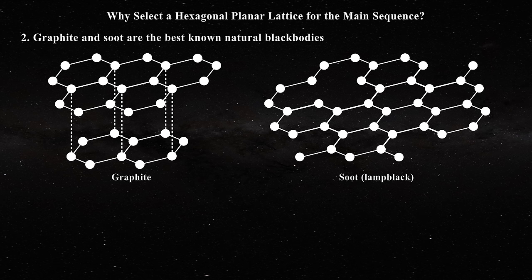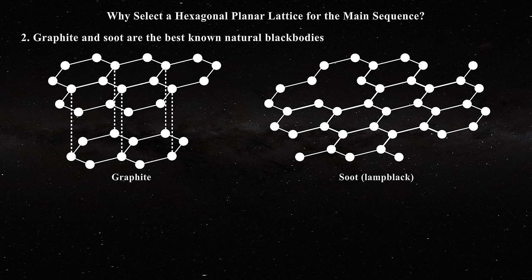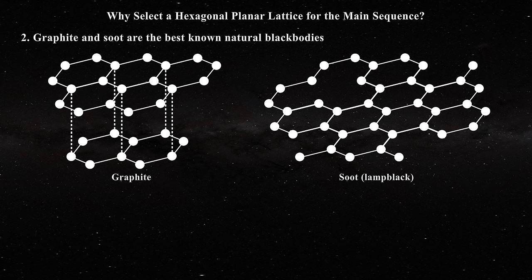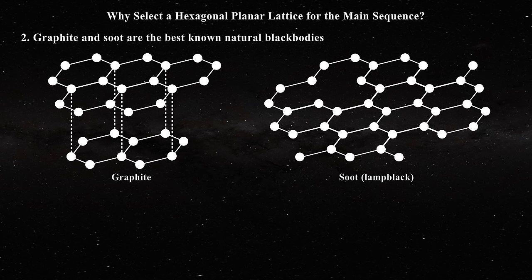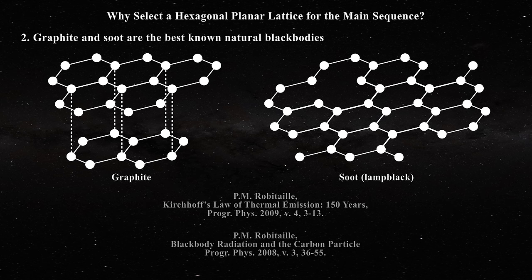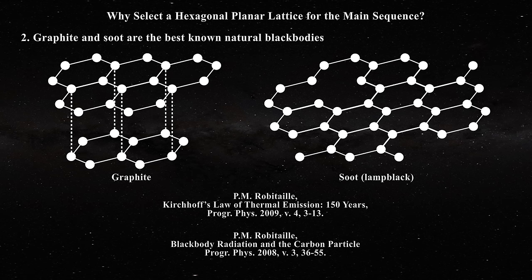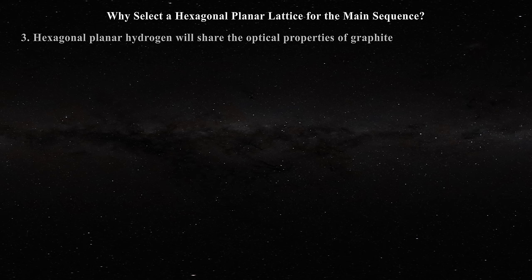Second, graphite and soot are the best occurring natural black bodies on Earth, and they possess a hexagonal planar lattice. Lamp black has long been utilized in studying black body radiation, and this goes back to times well before Kirchhoff. Graphite is still used today at the NIST to build laboratory black bodies, and this is no accident. You can learn more about the use of graphite and soot in the preparation of black bodies in these papers. This provides a powerful incentive to select the hexagonal planar lattice to account for the black body spectrum of the sun.